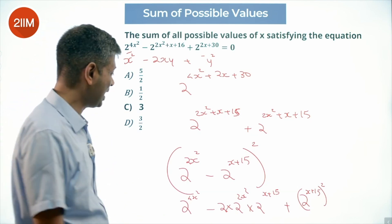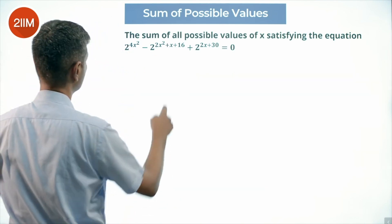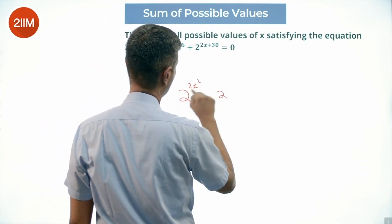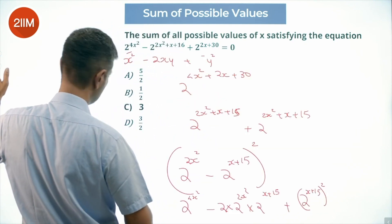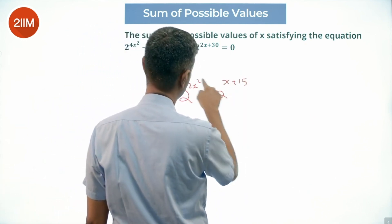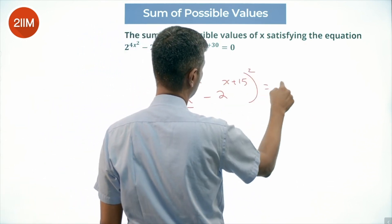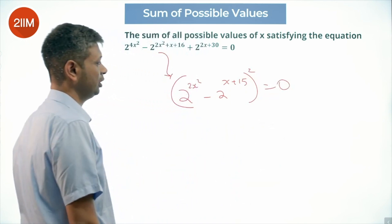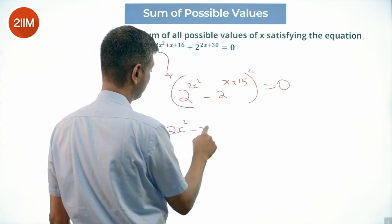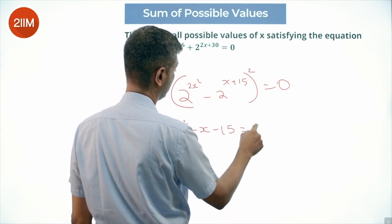Our expression is this, this is nothing but 2 power 2x square minus 2 power x plus 15, the whole square equal to 0, these 2 should be equal, so we are basically saying 2x square minus x minus 15 is equal to 0.